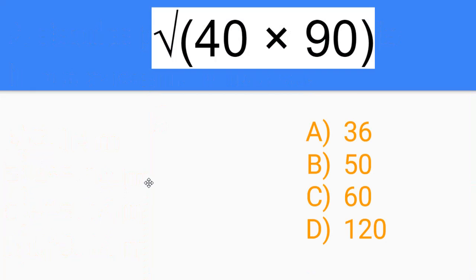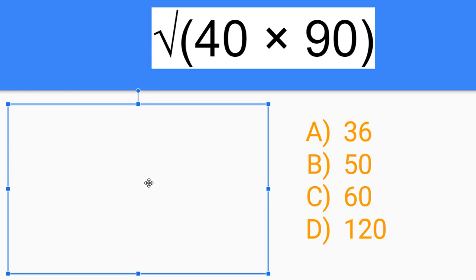Our next question is, the square root of 40 times 90 is? So let's first do 40 times 90. So 40 times 90 would get you 3,600. And the square root of 3,600 would be 60 because 60 times 60 will get you 3,600. So our answer will be C.